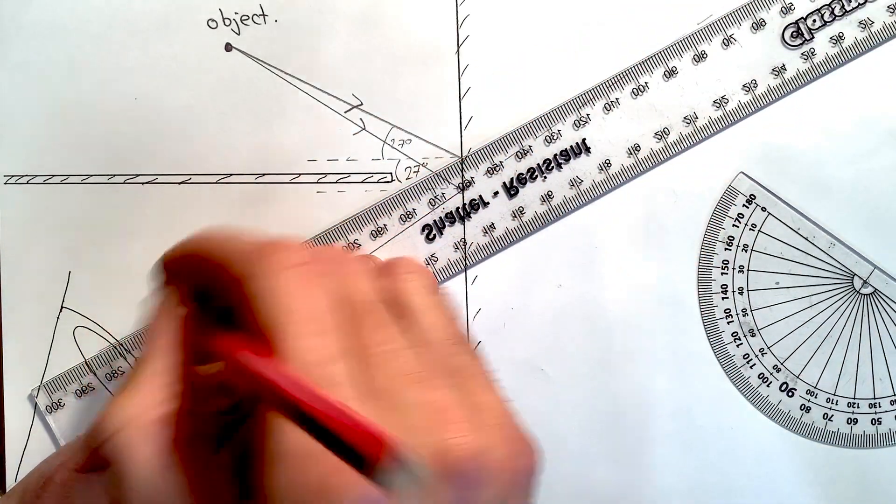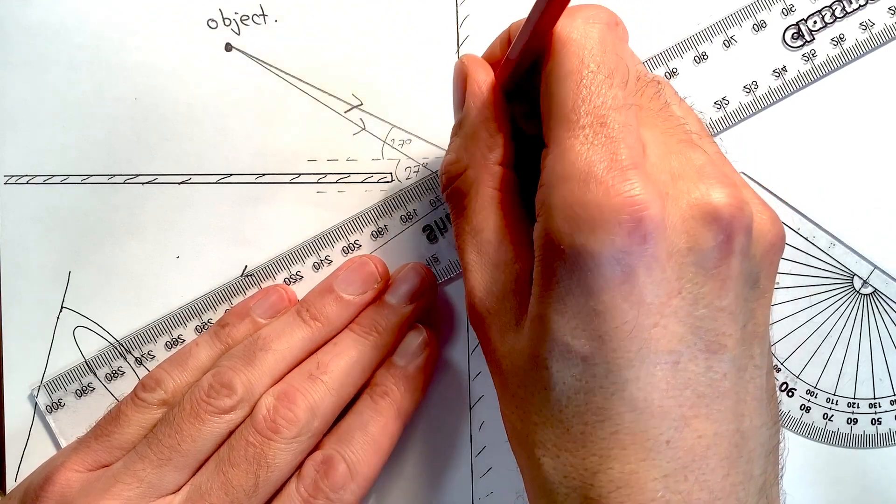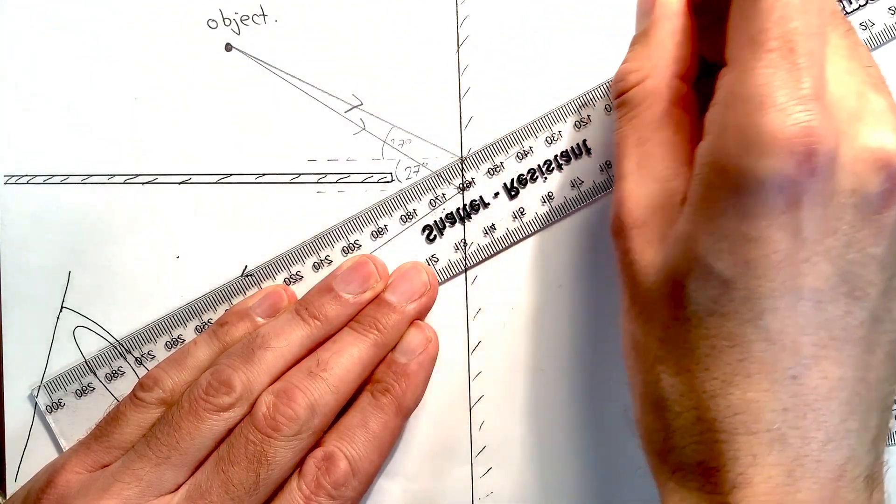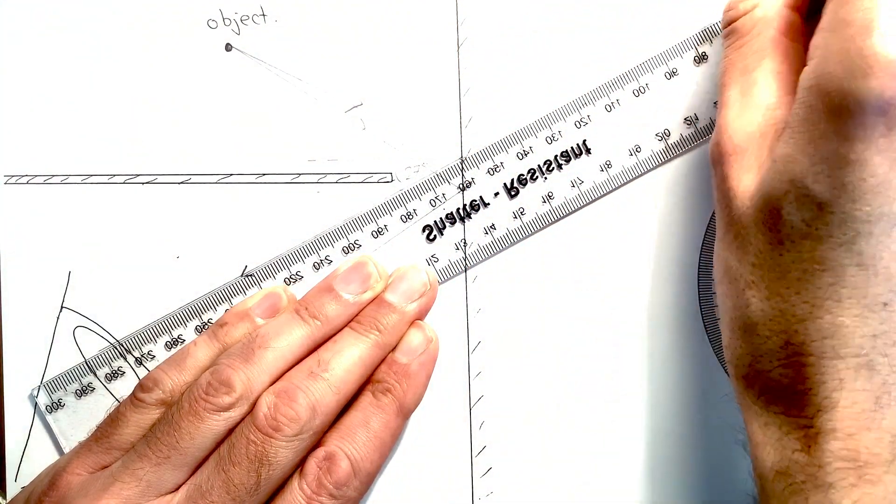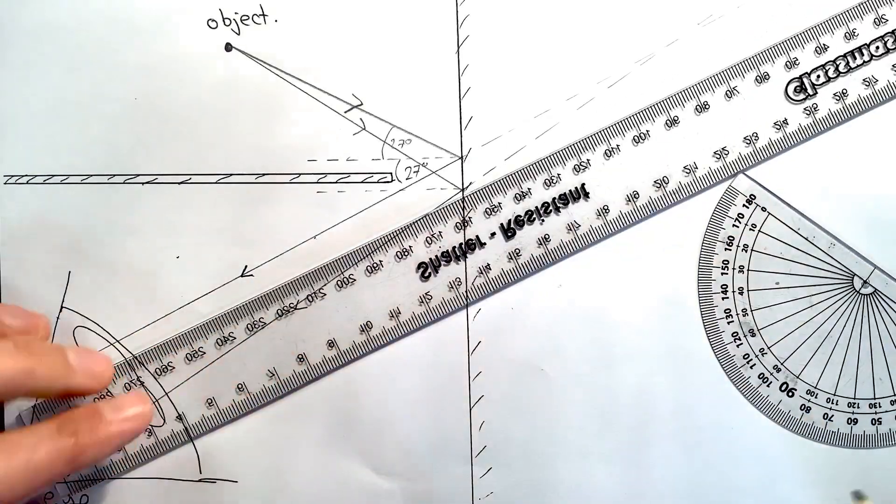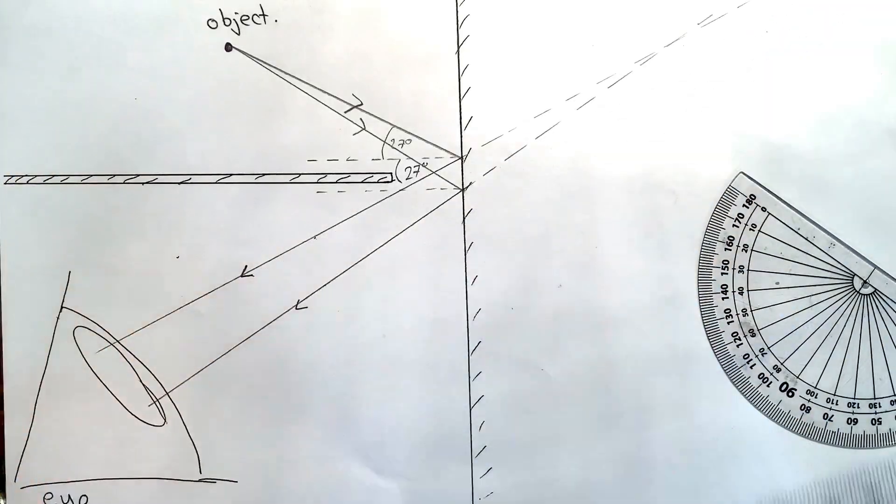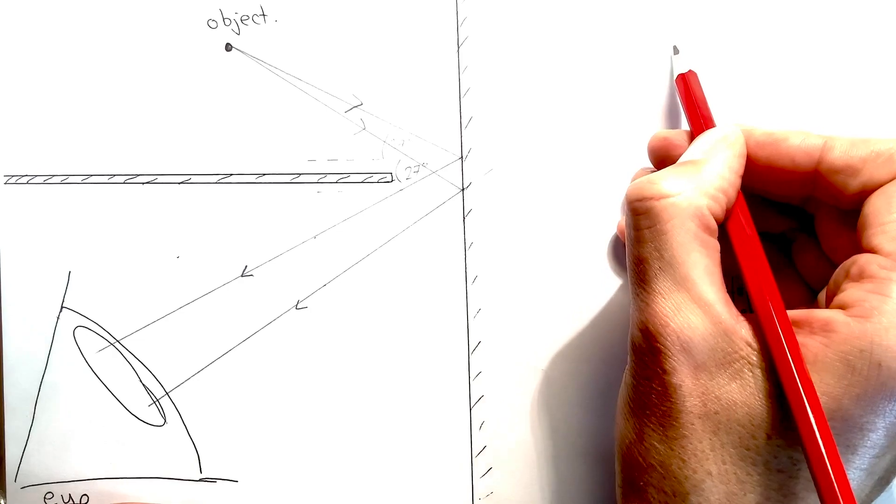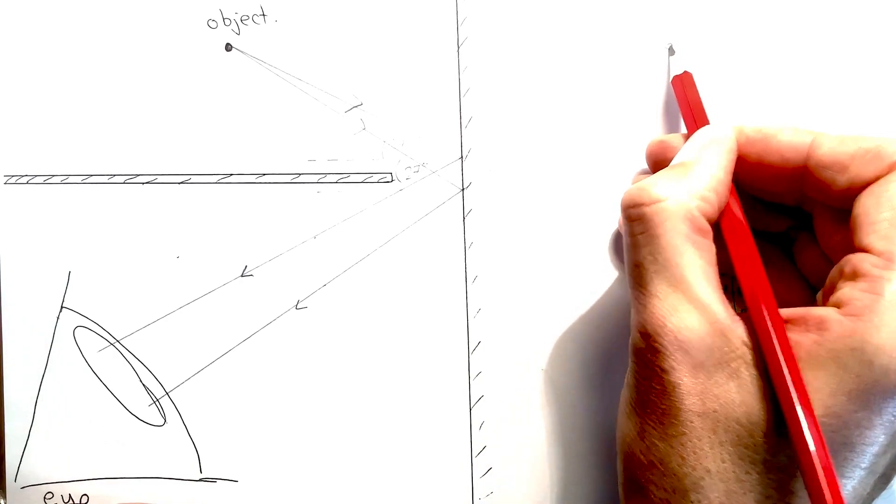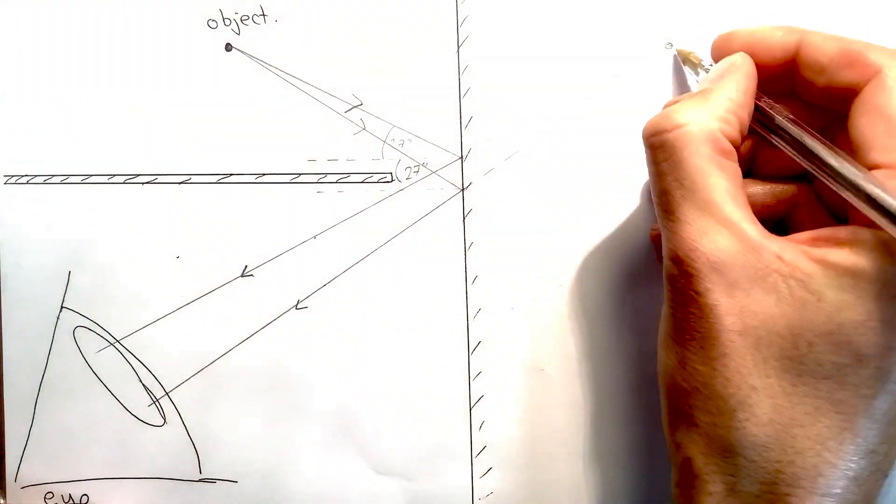I line up the ruler along the reflected ray and do the virtual ray going backwards behind the mirror. And then where those points cross, I can put a mark, and that should be the image, which I've labeled there.